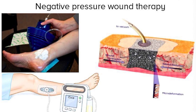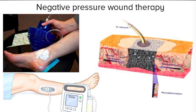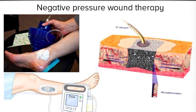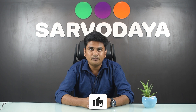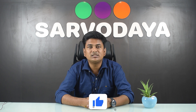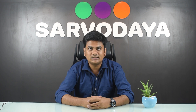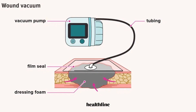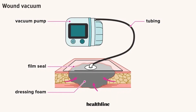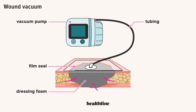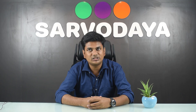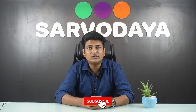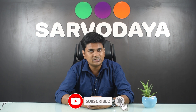It is also referred to as negative pressure wound therapy. During a vacuum assisted closure procedure, a healthcare professional applies a foam bandage over an open wound and a vacuum pump, creating negative pressure around the wound. This means pressure over the wound is lower than the pressure in the atmosphere.